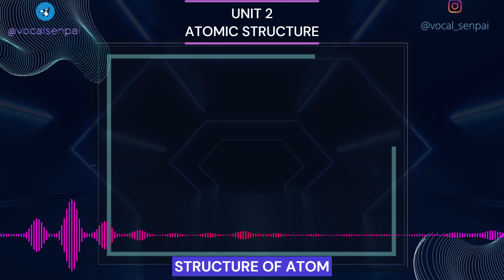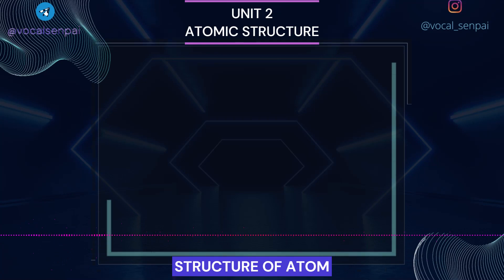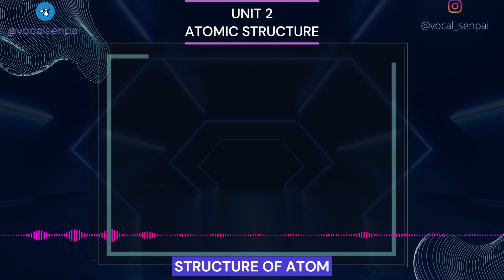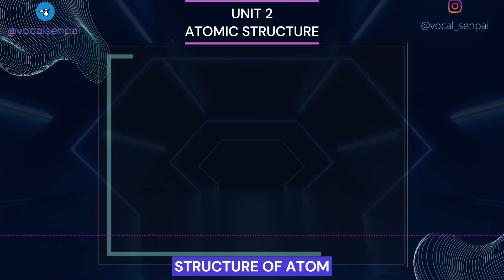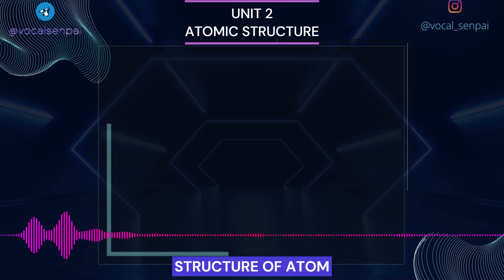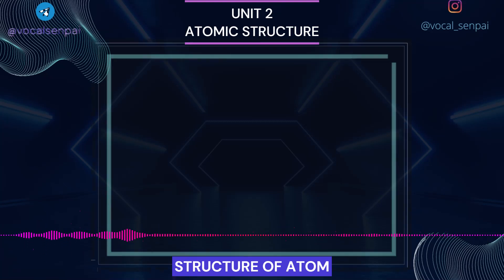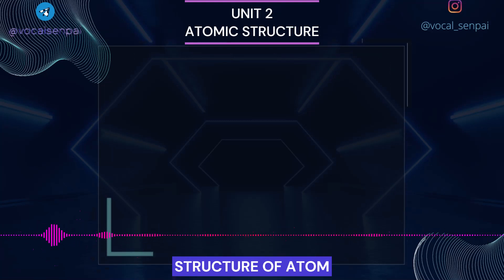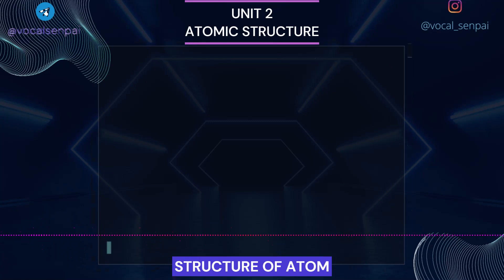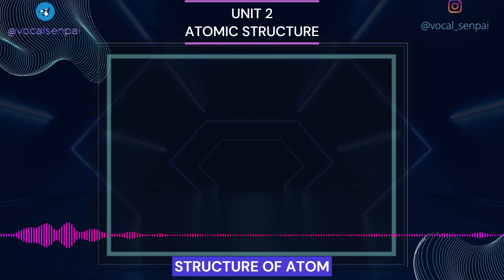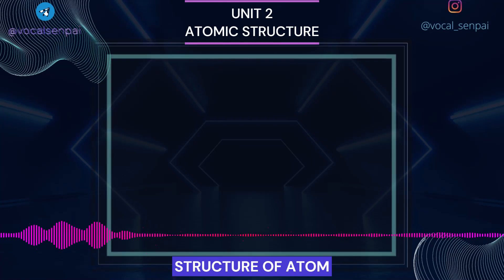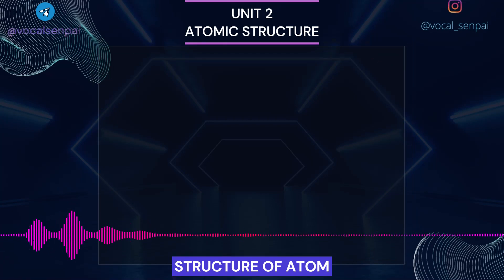The atomic theory of matter was first proposed on a firm scientific basis by John Dalton, a British school teacher in 1808. His theory, called Dalton's atomic theory, regarded the atom as the ultimate particle of matter. Dalton's atomic theory was able to explain the law of conservation of mass, law of constant composition and law of multiple proportion very successfully. However, it failed to explain the results of many experiments.